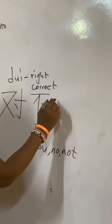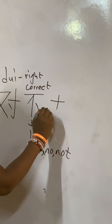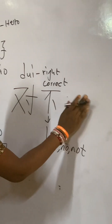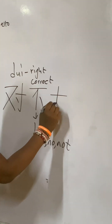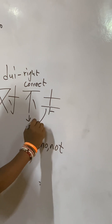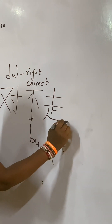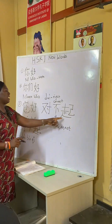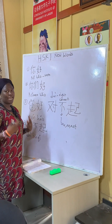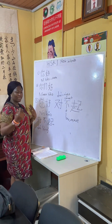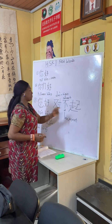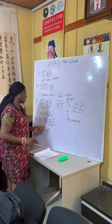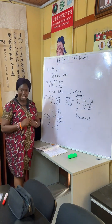Then 起 (qǐ). When you are writing 起 (qǐ), first you close — write down the strokes. So 起 (qǐ) means to rise. Then 对不起 (duì bu qǐ) — all three together mean I am sorry.